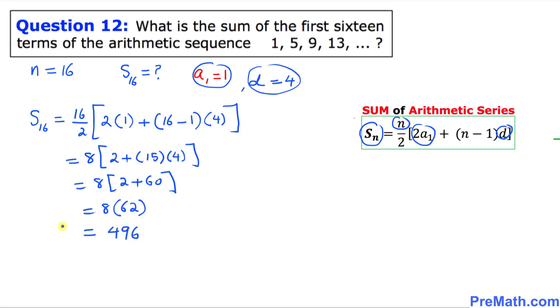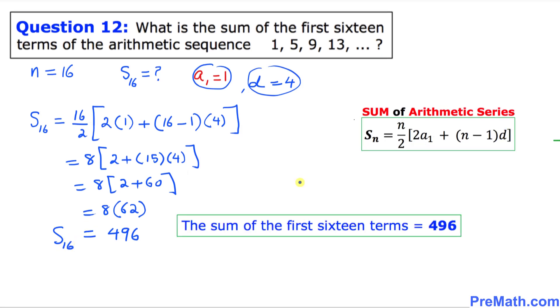So that means our sum of 16 turns out to be 496. Thus our sum of first 16 terms is 496. And that's it.